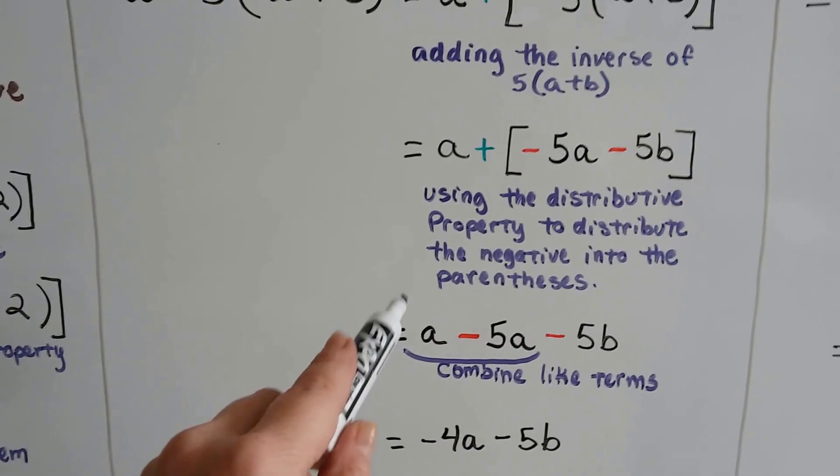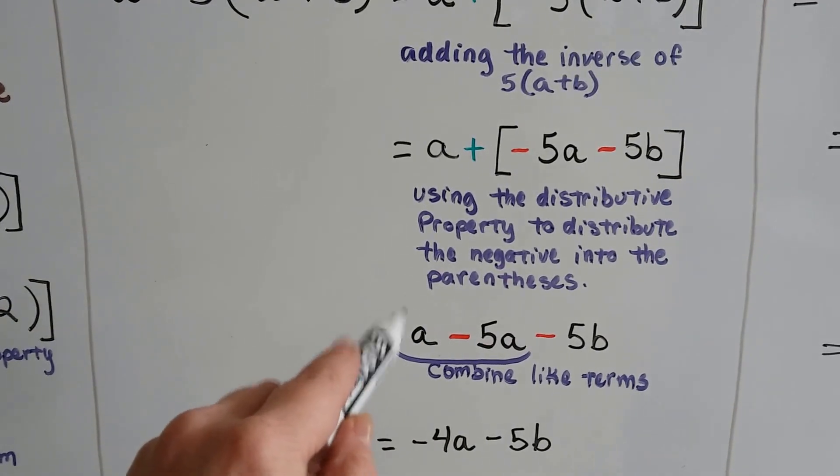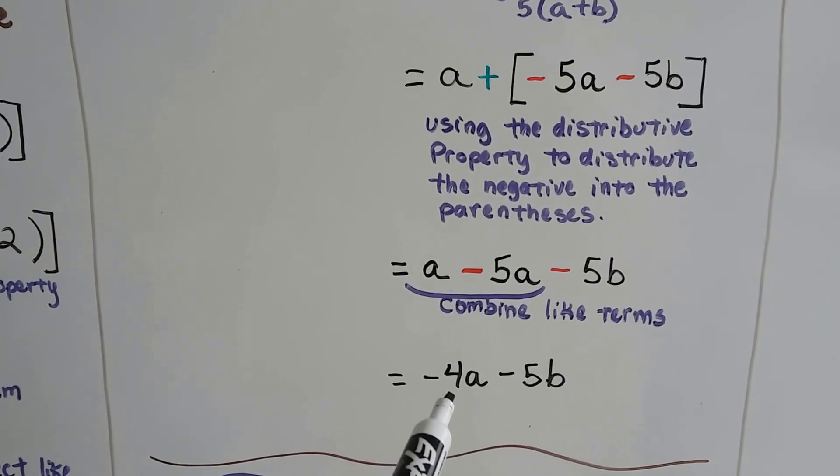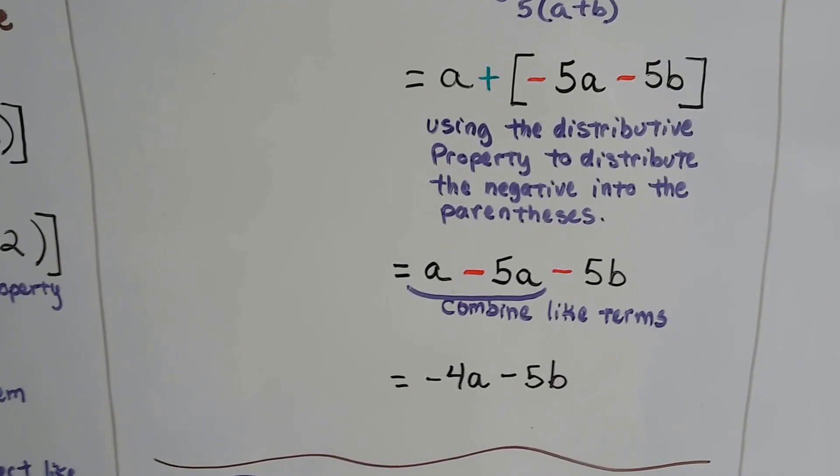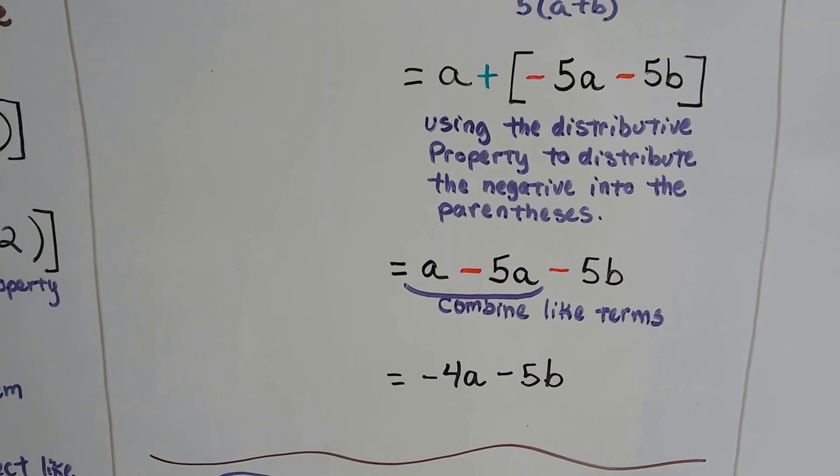Remember, there's a little invisible 1 in front of that a, so it's like a 1 minus 5. So that gives us a negative 4a minus 5b when we simplify it.